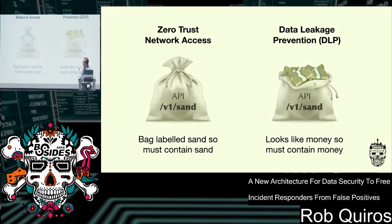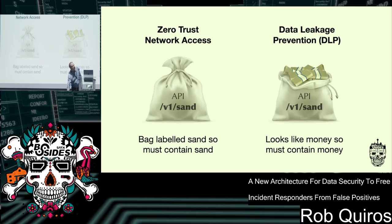This is how things work today: our zero trust and network access controls look at API parameters and HTTP headers, trying to figure out whether to give an entity access to an API. But that contains no information about what's inside that API or what it carries. We can add DLP on top of basic firewall controls, but DLP tells us what the data looks like — not if it's yours or mine. It says it looks like money, maybe it is, maybe it's not, we'll classify it as sensitive. But it's not an access control.